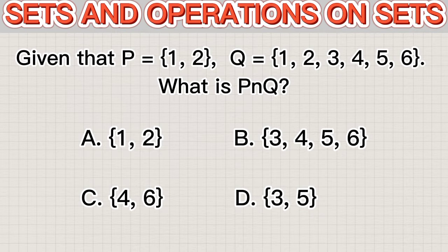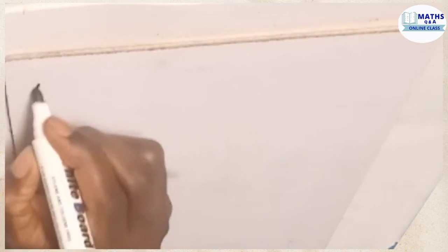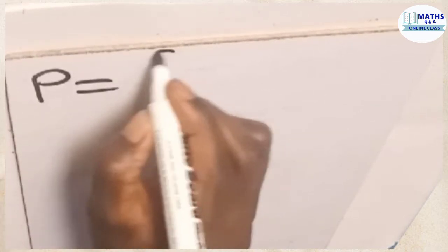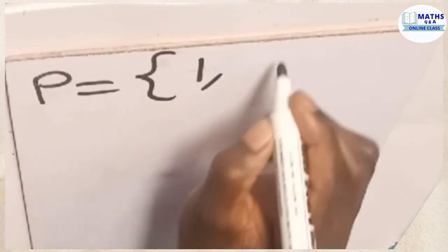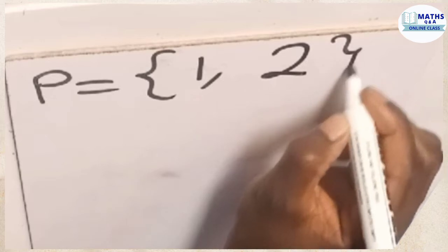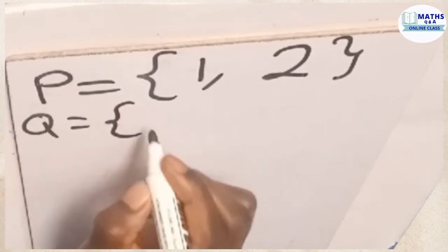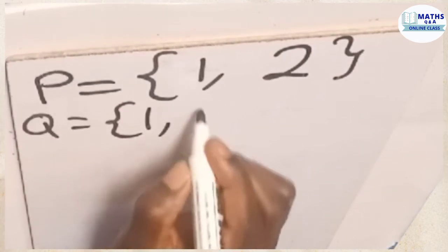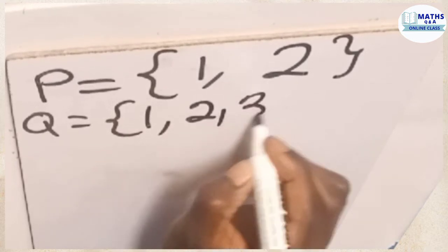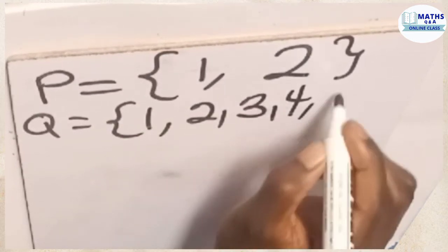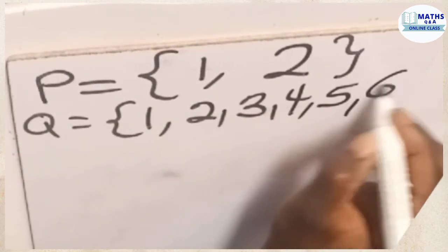Now, let's solve and see which one is the correct option. So we have set P, which is having the members 1 and then 2, and we have set Q, which is having the members 1, 2, 3, 4, 5, and 6.